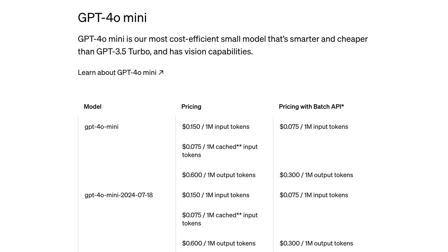If you have a credit card and can afford spending a few dollars, I recommend using a model from OpenAI, who are the makers of ChatGPT. At the moment, I'd recommend using GPT-4o Mini, which is fast, cheap, and high quality. Pricing is based on the number of input and output tokens you use. GPT-4o Mini currently costs 15 cents per million input tokens plus 60 cents per million output tokens.